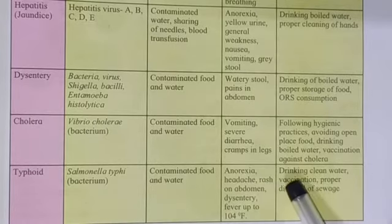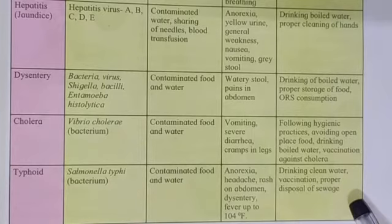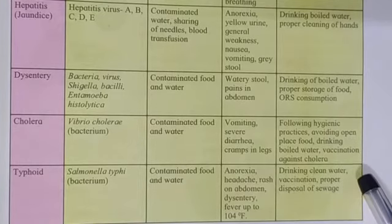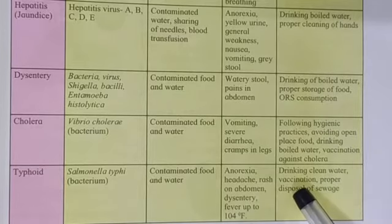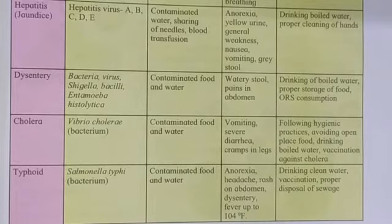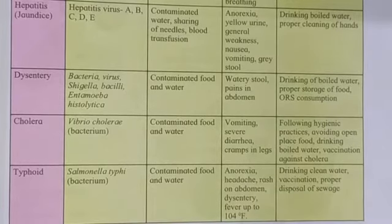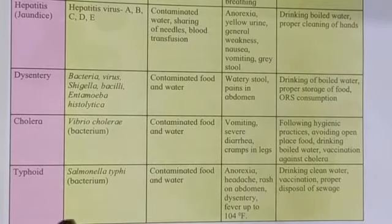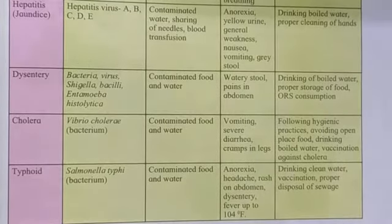How to prevent typhoid? Drinking clean water — it will not enter your body and you will not get typhoid. Vaccination — this is the best way. And proper disposal of sewage, because due to wastewater the bacterium grows and may enter the human body. So to avoid typhoid, proper disposal of sewage is necessary.